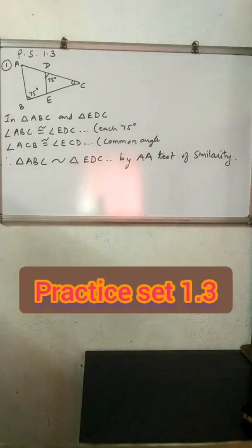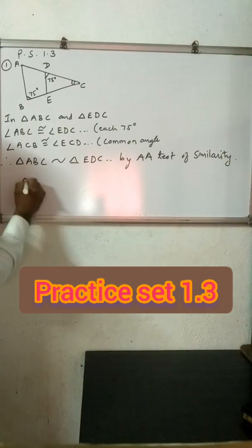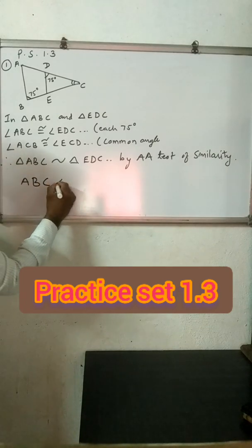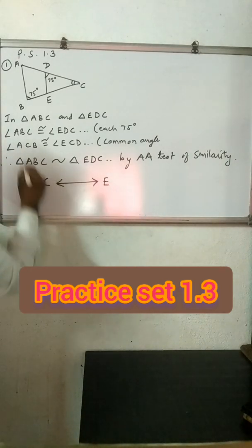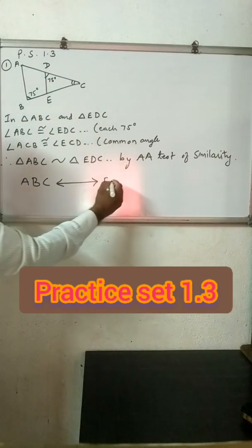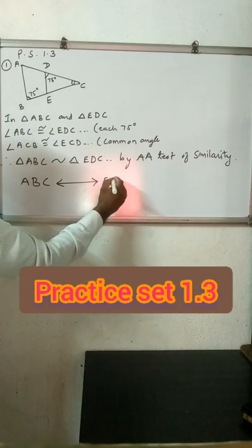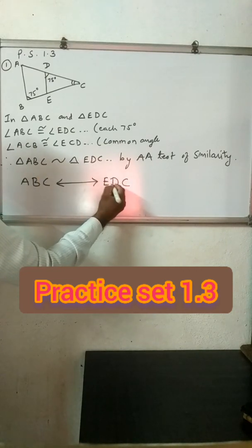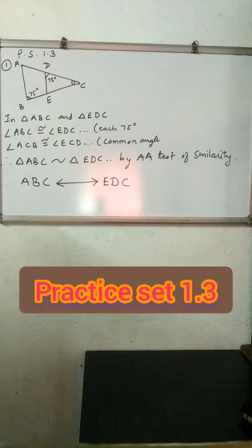Hence, the one-to-one correspondence of these two triangles is: A goes to E, B goes to D, and C corresponds to C. This is the one-to-one correspondence of this pair of similar triangles.